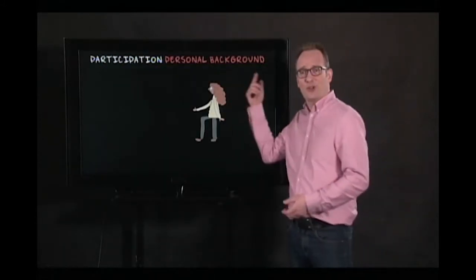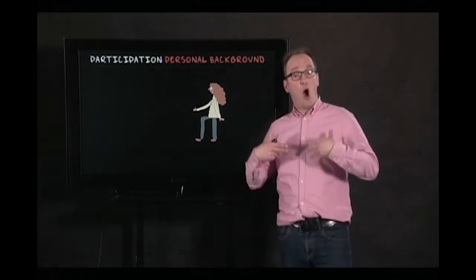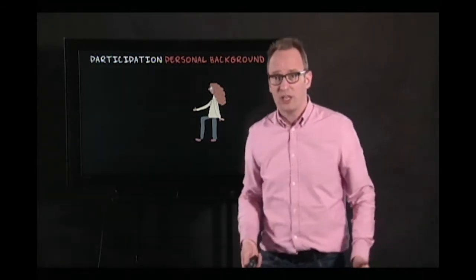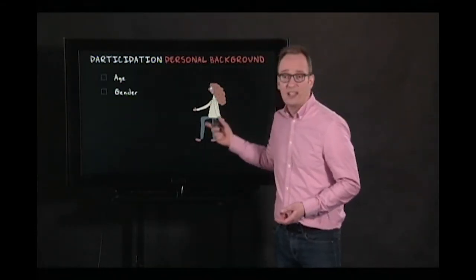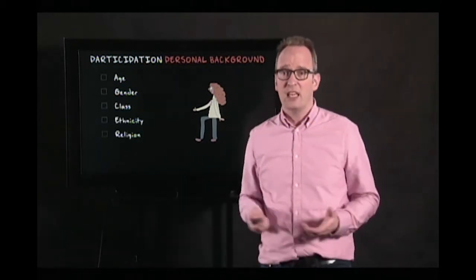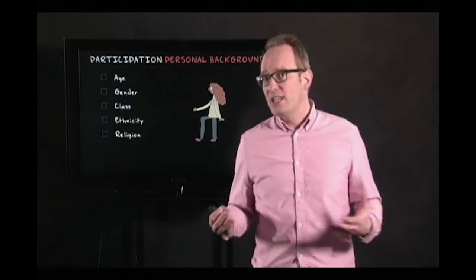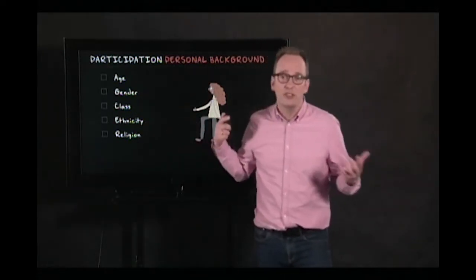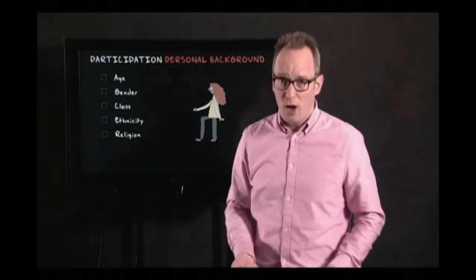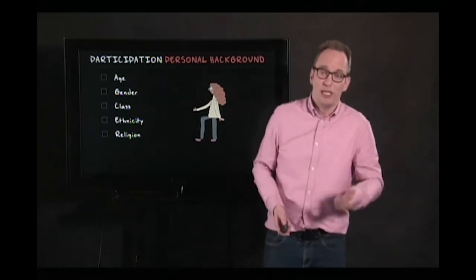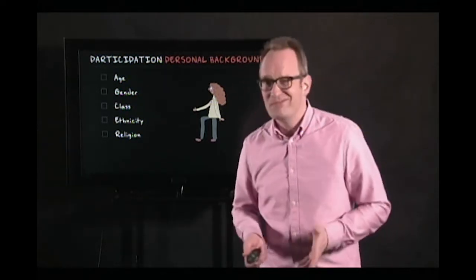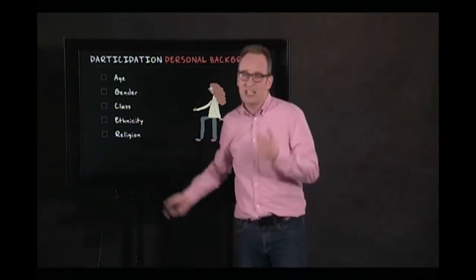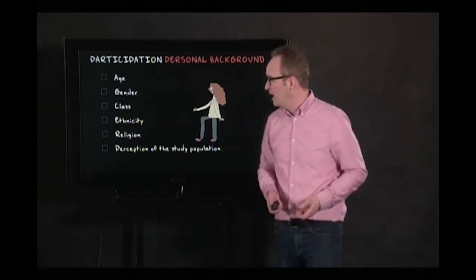When you try to observe a naturally occurring situation, you bring yourself in — people react on you. There's reactivity. Your age, gender, class, ethnicity, and religion all play a role, along with many other features — some of which you can't easily change. And if people perceive you to be of a certain age, gender, or ethnicity, it doesn't really matter whether you actually are — the perception is there.